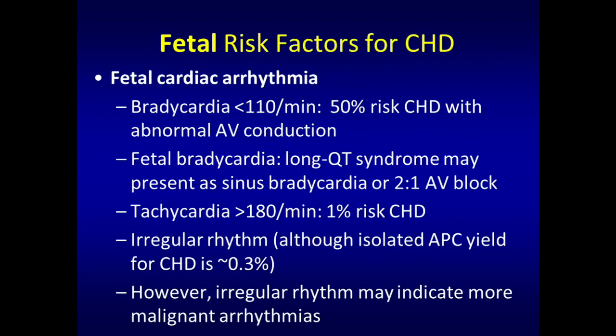This slide was also covered in the first talk. When you have sustained bradycardia — defined as under 110 per minute — and abnormal AV conduction, there is a 50 percent risk of congenital heart disease, which would imply things like L-loop ventricles. It's also important to know that long QT syndrome can present as sinus bradycardia, so it's certainly on your differential for sustained fetal bradycardia.